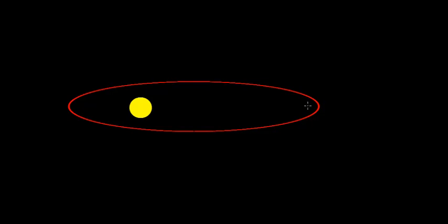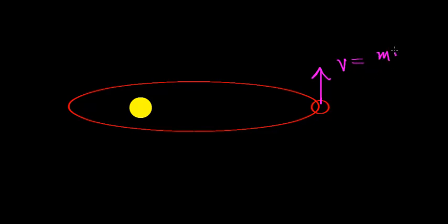In this video, I'd like to calculate the orbital velocity of Mars as it revolves around the Sun. If this is the planet Mars — not drawn to scale — we know that its velocity is tangential to the orbit it actually travels. What we're looking for is the actual orbital velocity, and we're going to express it in units of miles per hour.